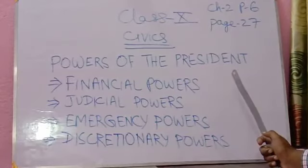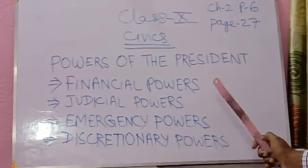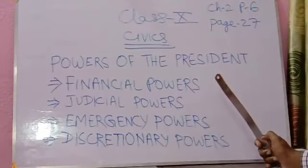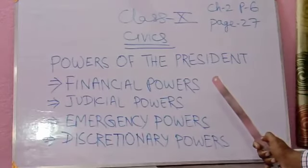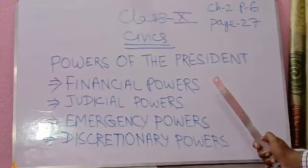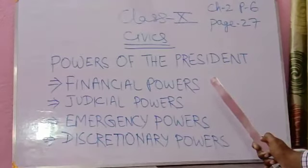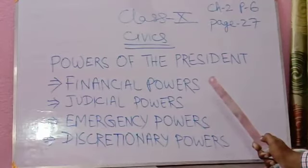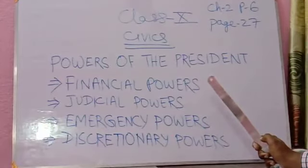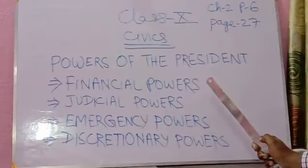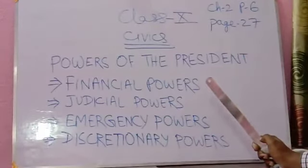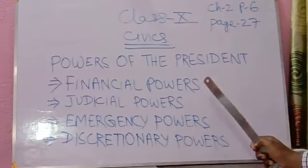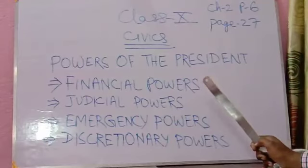If the Lok Sabha is dissolved before the date of issue of the proclamation or during the period of one month after the proclamation without approval, the proclamation must be laid before the Lok Sabha for approval. If it is approved by the Lok Sabha, it must then be laid before the new Lok Sabha during its first meeting. If the new Lok Sabha does not approve the proclamation, certain conditions apply.